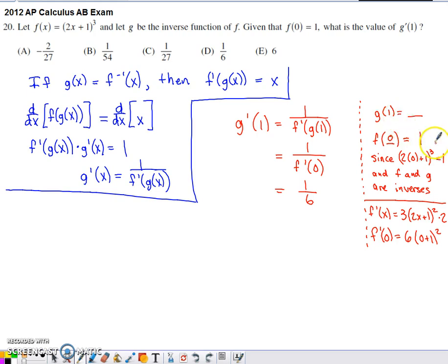So the input becomes the output and the output becomes the input. And what that means is that g of 1 is going to have to equal 0.